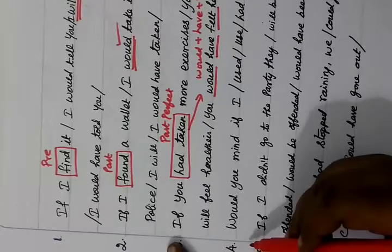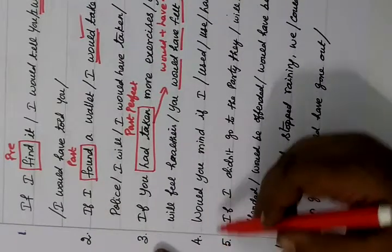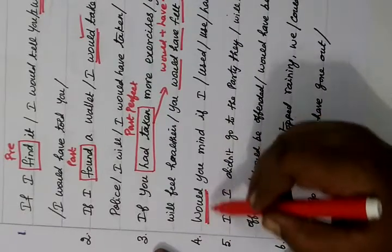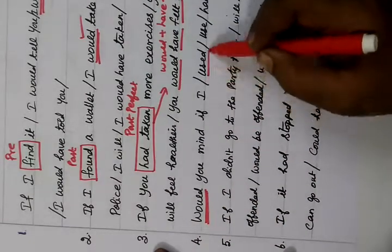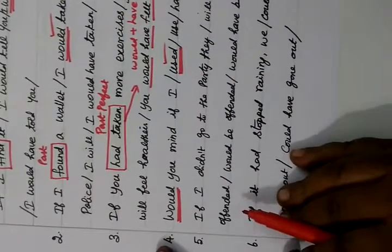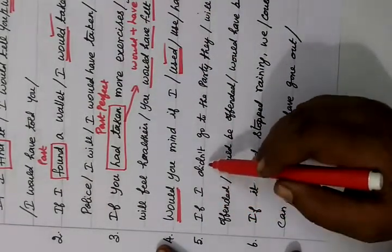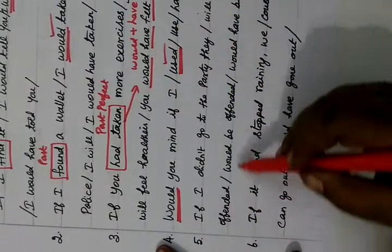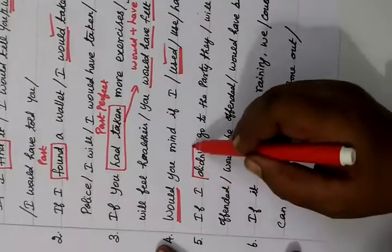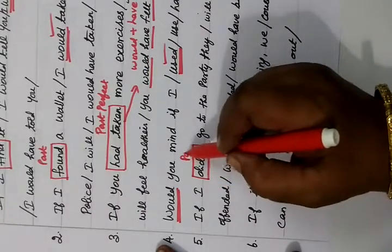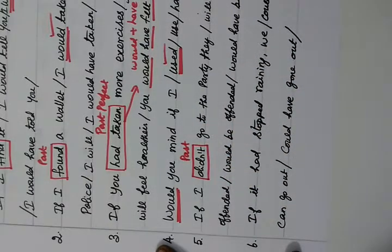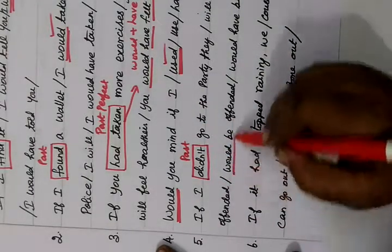More MCQ examples: 'Would you mind if I used / had used?' — choose the correct form. 'If I didn't go to the party, they will be offended / would be offended / would have been offended.' 'Didn't' is past tense, so we select 'would be offended'.